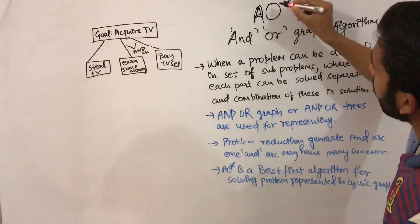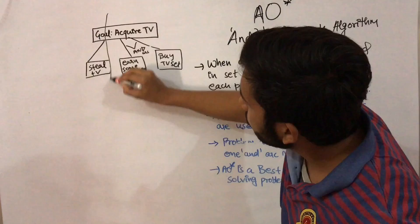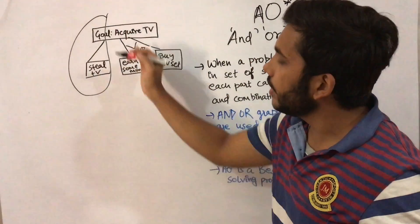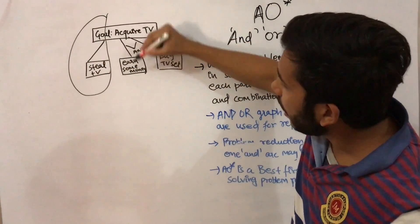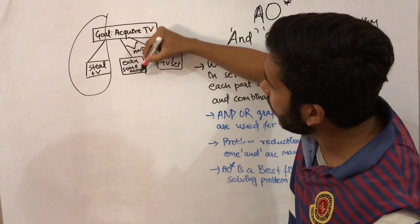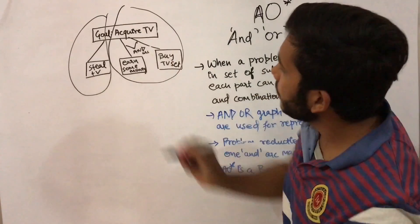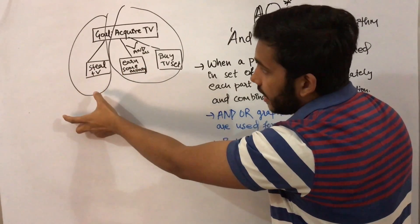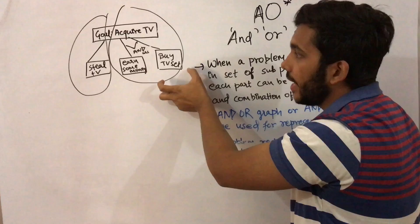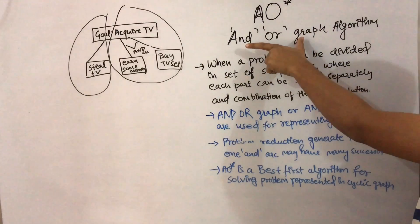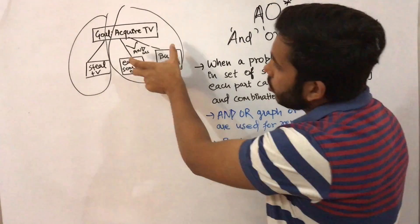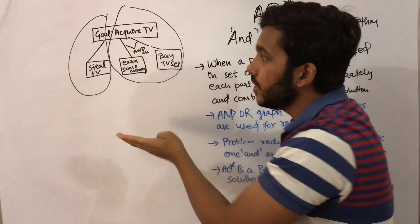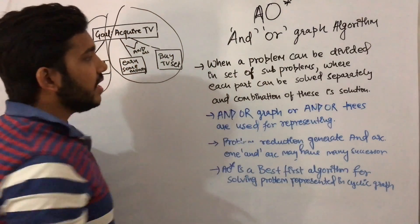This is how the AO* AND-OR graph algorithm works. You can acquire a TV by stealing — that's one direct option — or you can first earn some money and then buy a TV set, which requires two steps in combination. So for the problem 'acquire a TV', there are two solutions: steal a TV, or earn some money AND buy a TV set. That's why this is called the AND-OR graph algorithm.